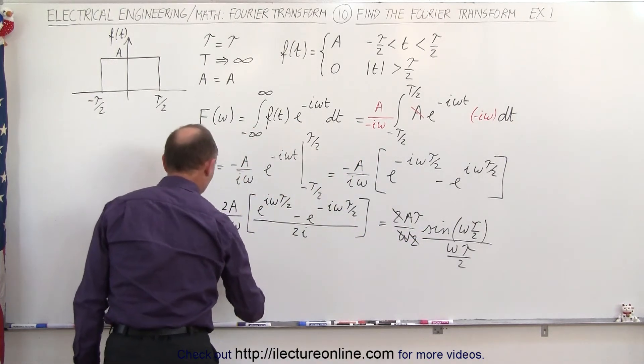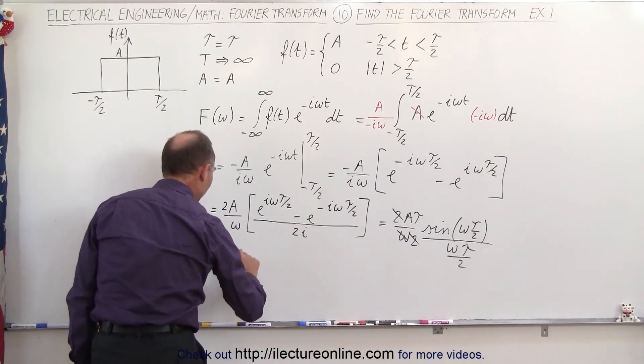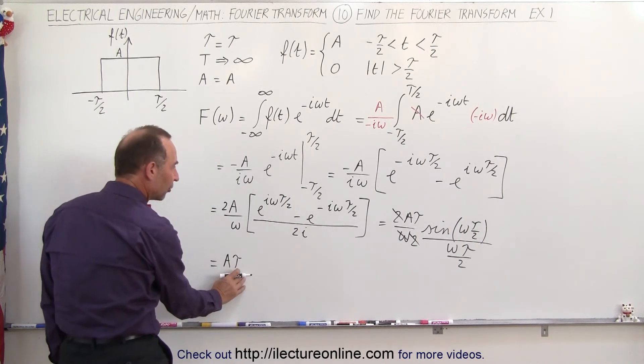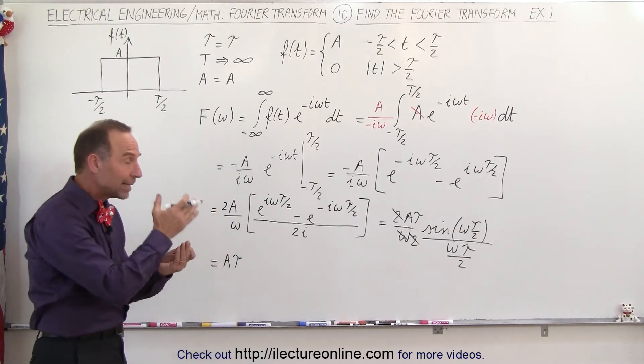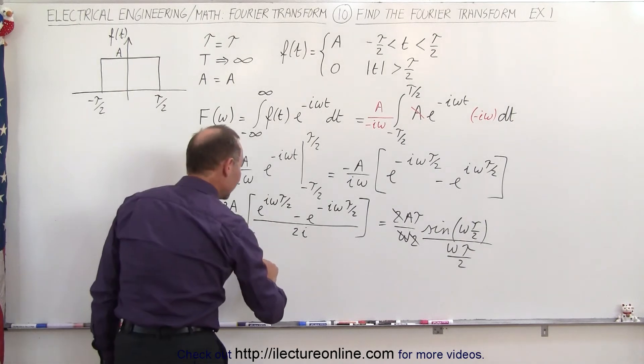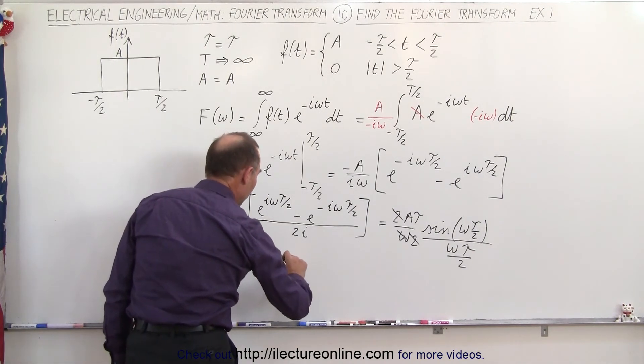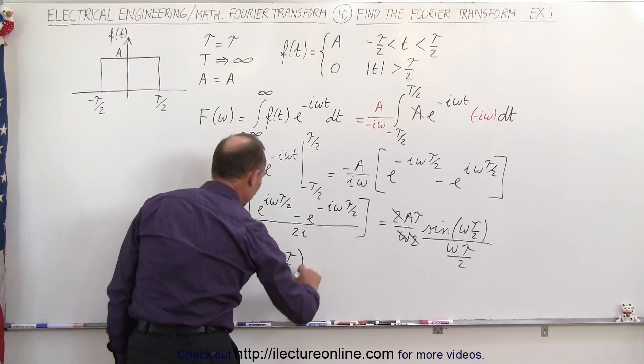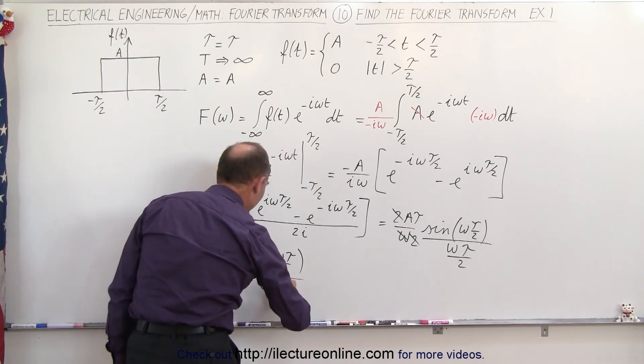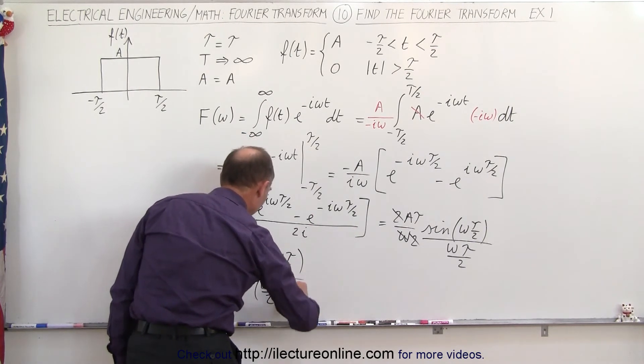And I can then write this as A times tau, which is the amplitude of the function at the omega equals 0 position, times the sine of omega times tau over 2 divided by omega times tau over 2 like this, which means that's a sinc function.